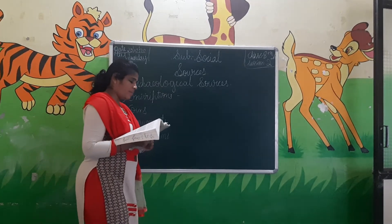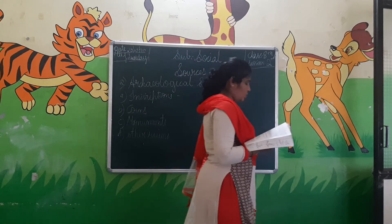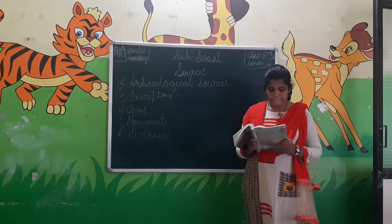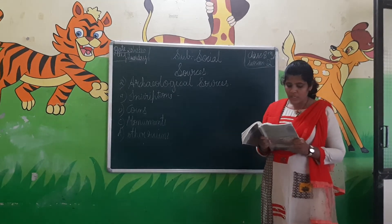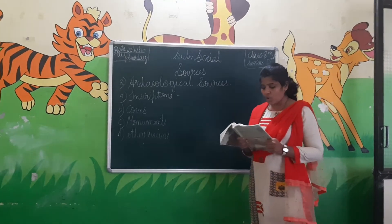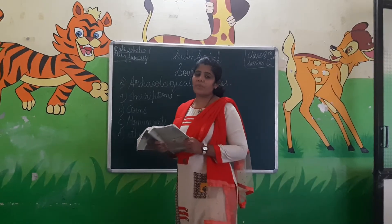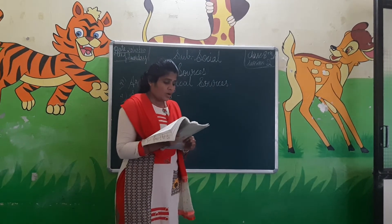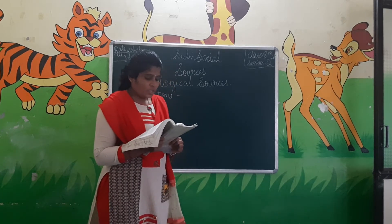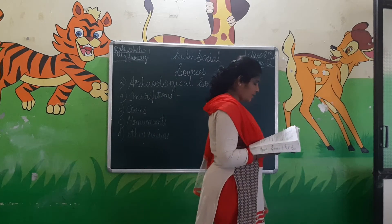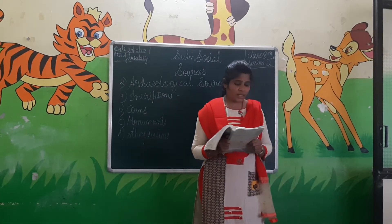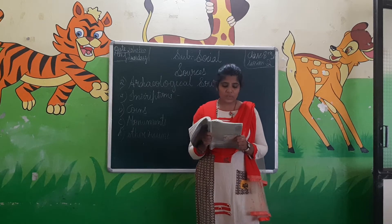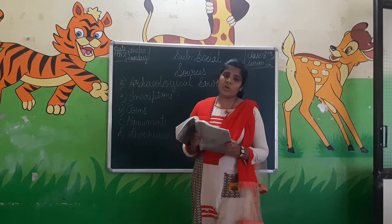Coins also reveal the economic conditions of the times and the metal technology used in particular kingdoms. Samudragupta had printed seven different types of gold coins. Based on the pictures on those coins, it is said that Samudragupta was a lover of music — from the different structures on his coins we come to know this.